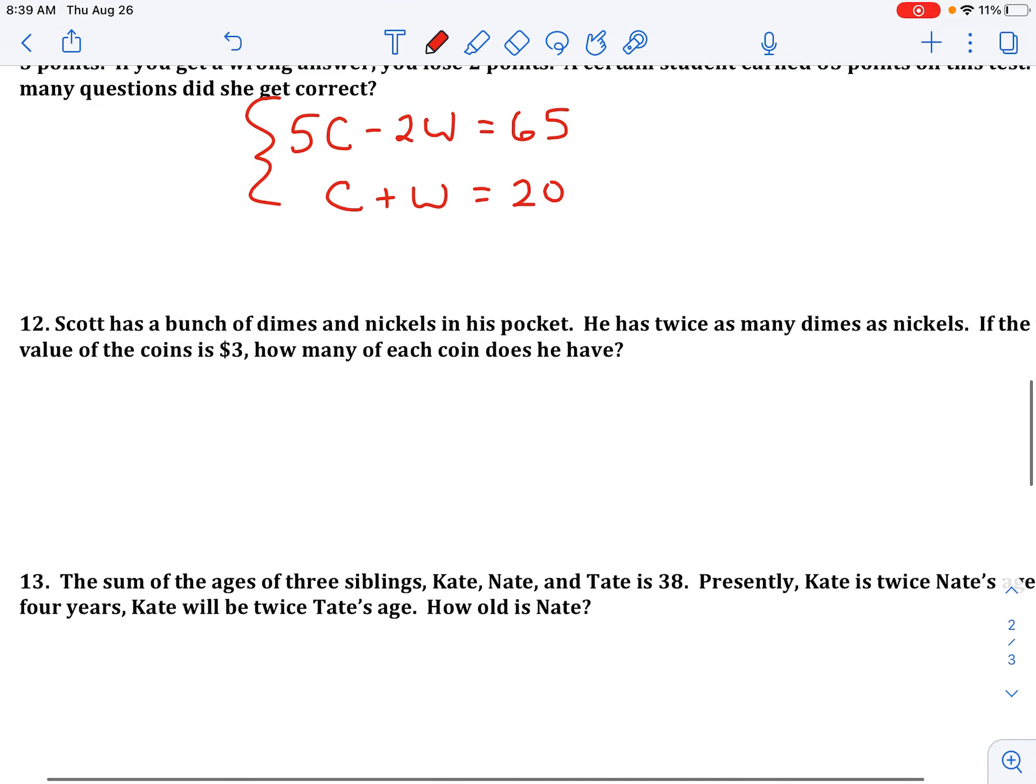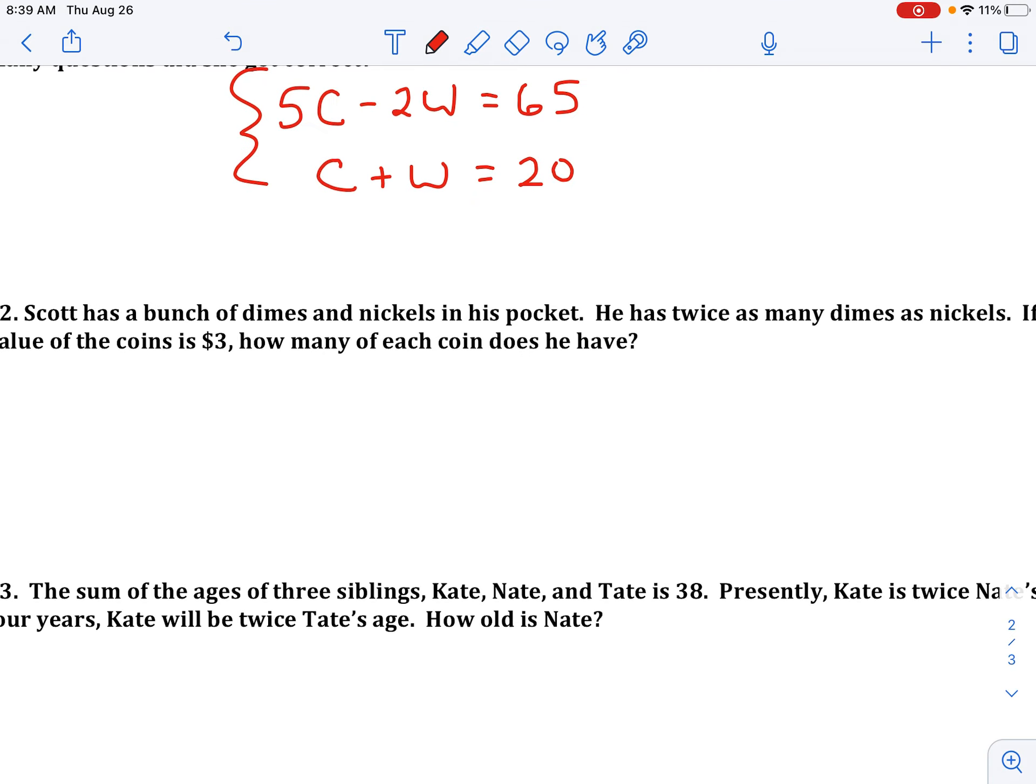For the second one, Scott has a bunch of dimes and nickels in his pocket. He has twice as many dimes as nickels. So we have again two variables, dimes and nickels, and if you have twice as many dimes as nickels, that means your dimes, to make them even, we have to double the amount of nickels. And it's a common mistake to flip this and have the two on the other side.